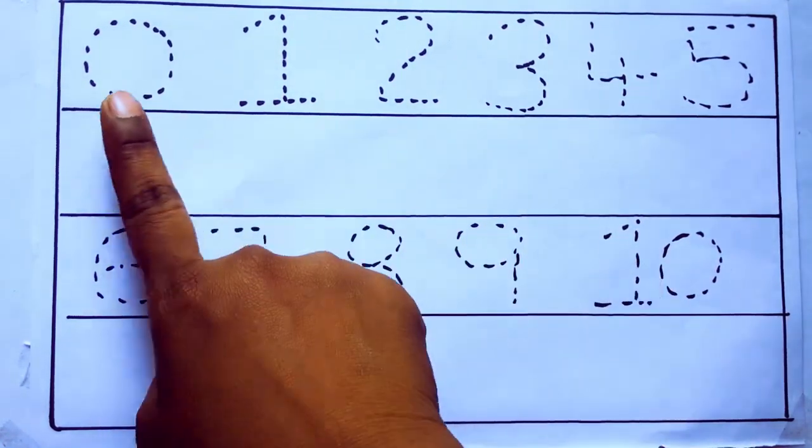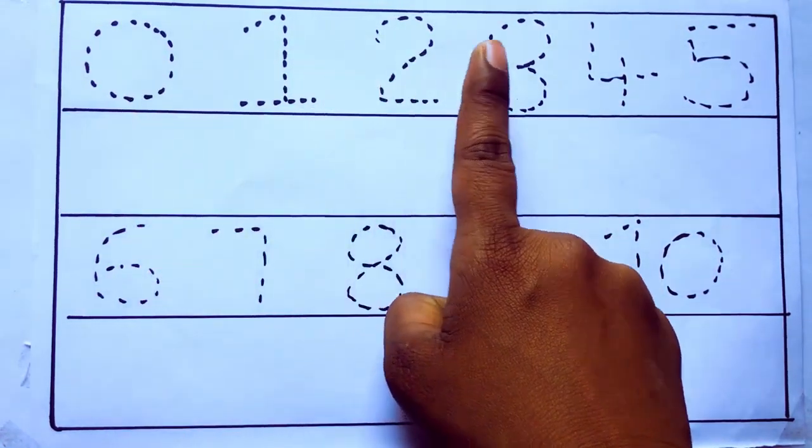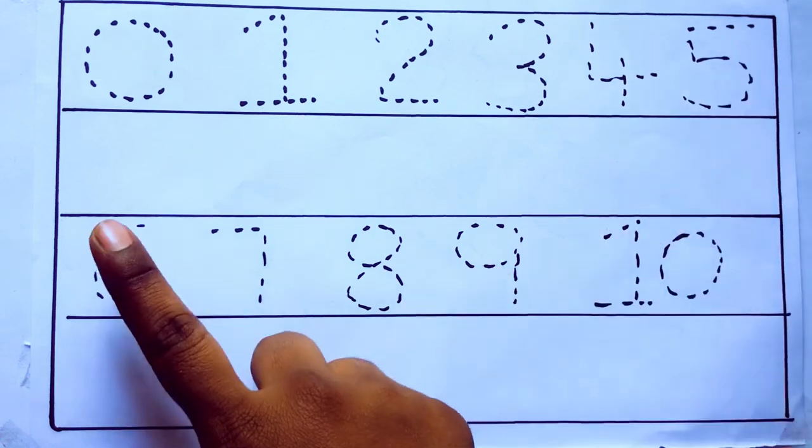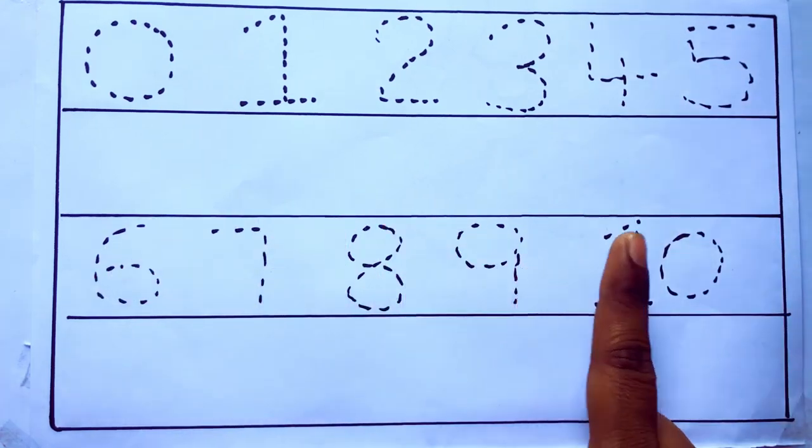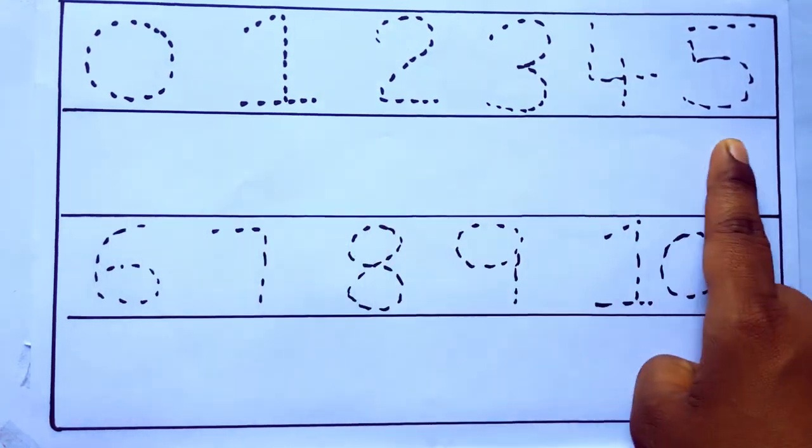0 to 10: 0, 1, 2, 3, 4, 5, 6, 7, 8, 9, 10 and rewriting the numbers.